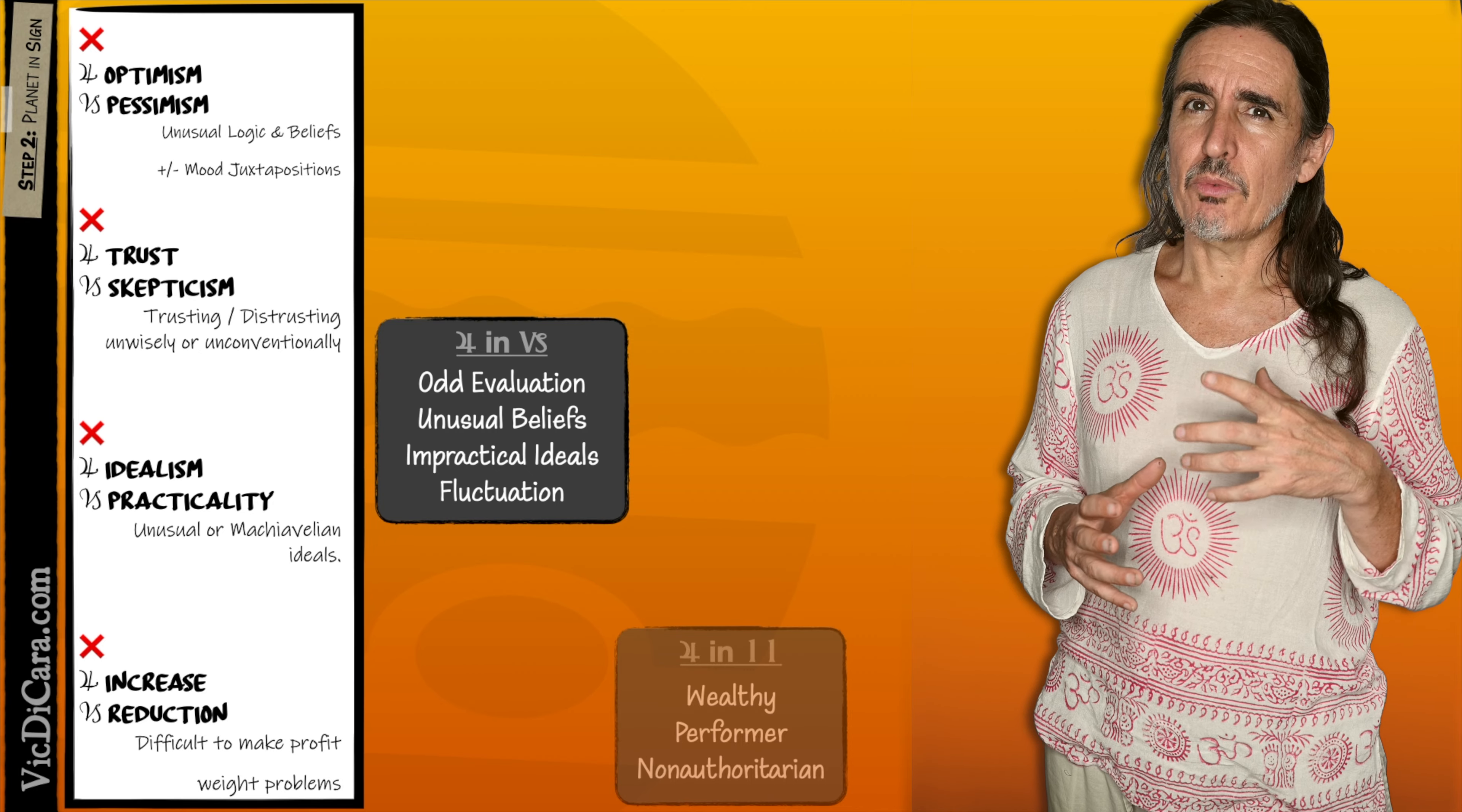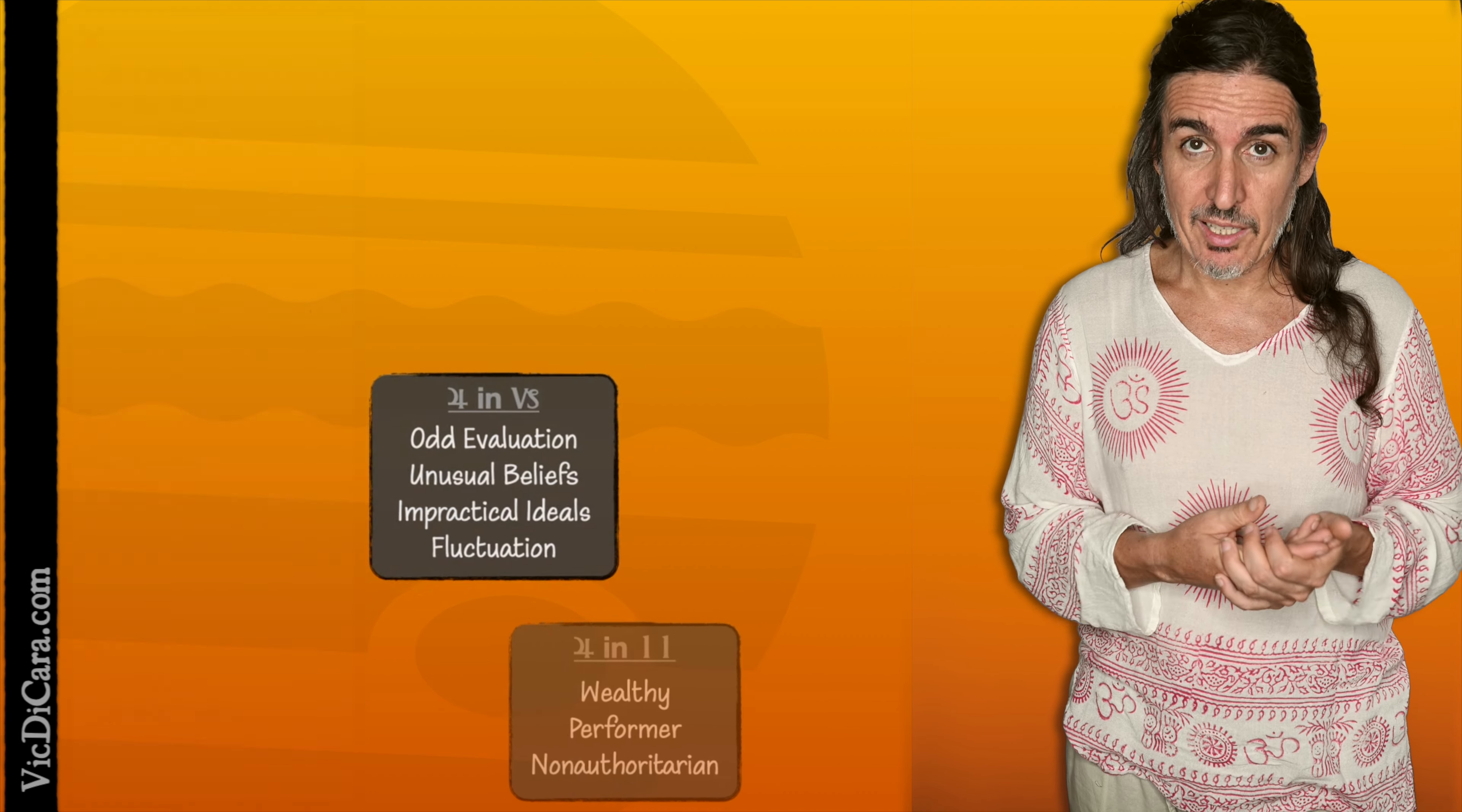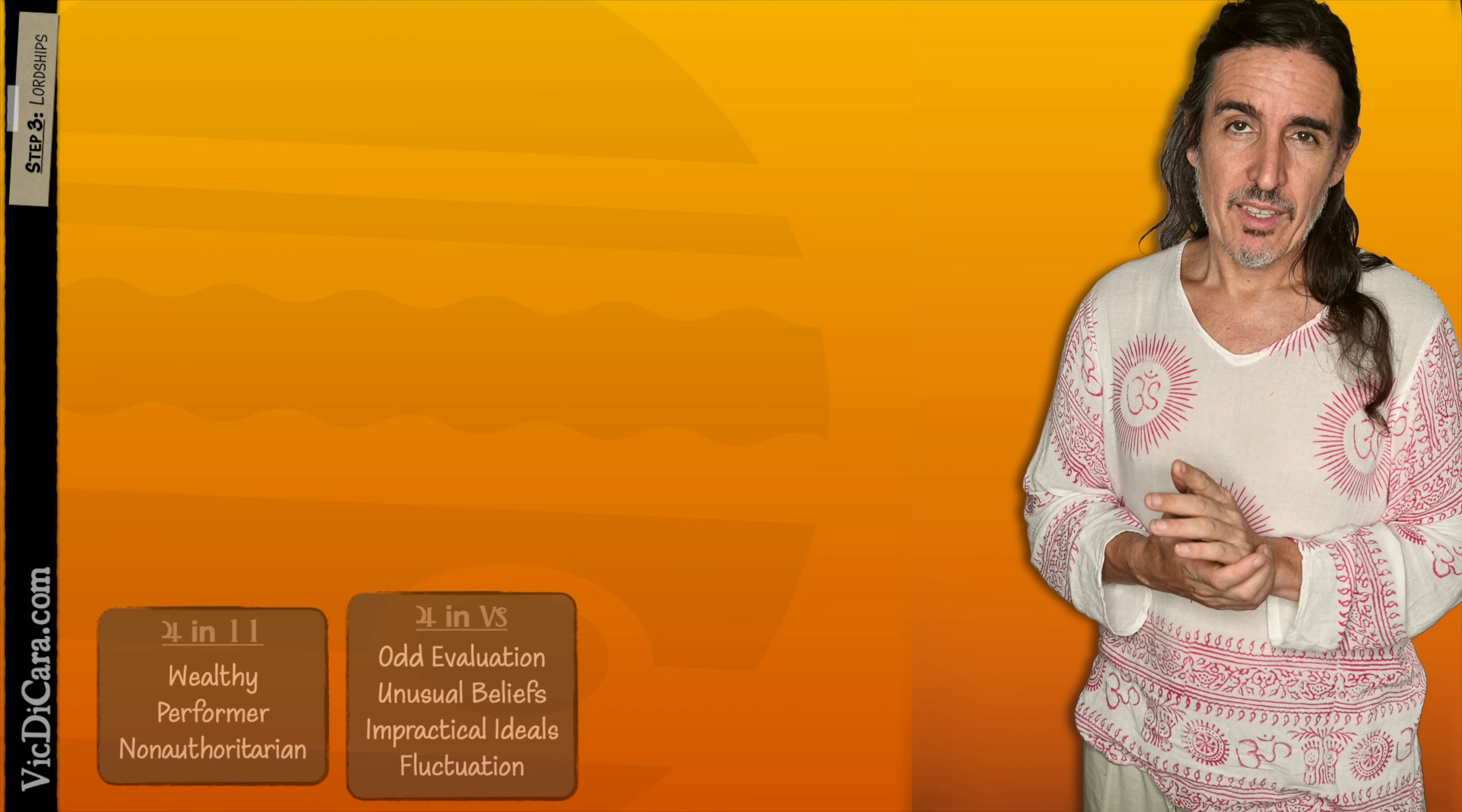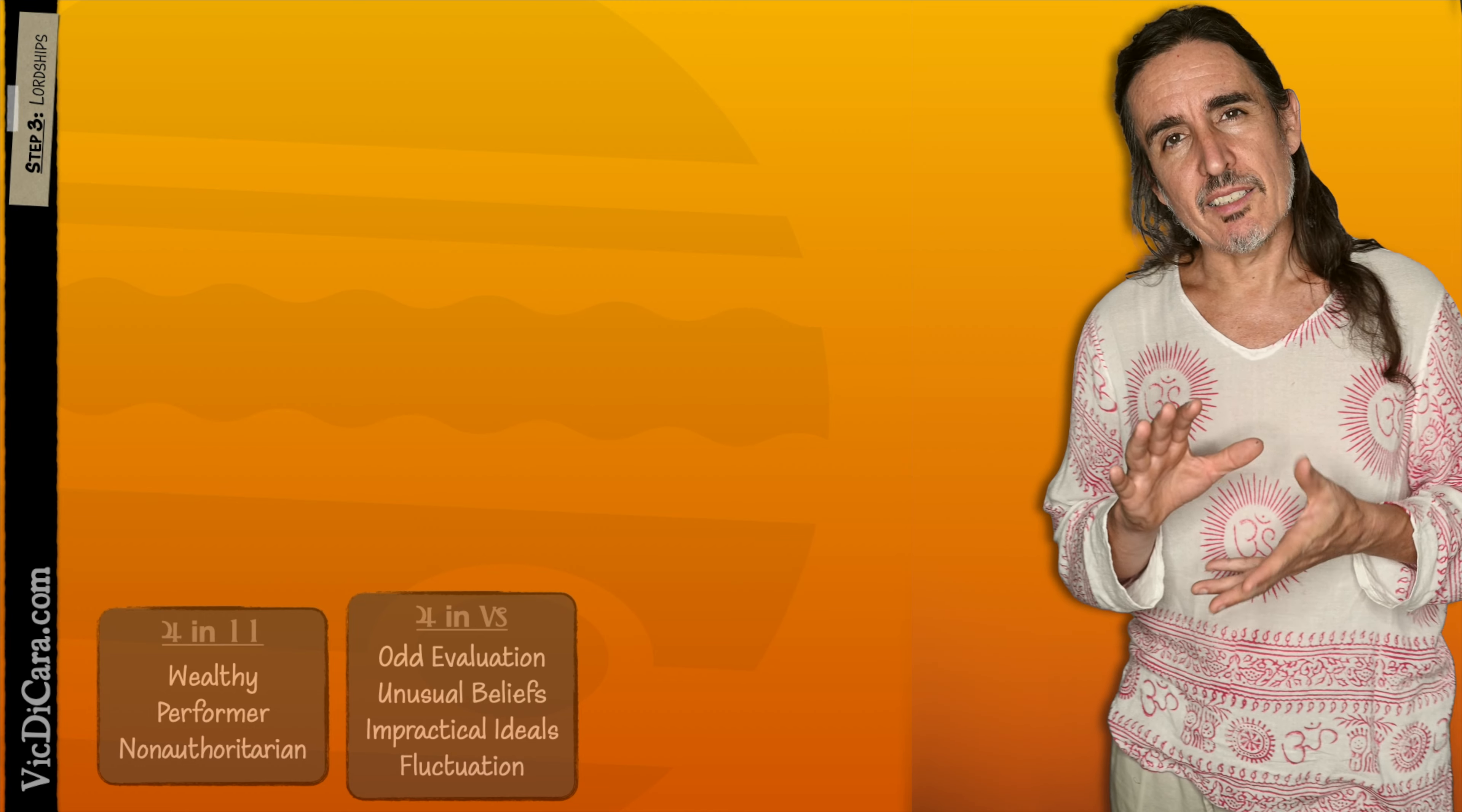So now that we're refreshed on what Jupiter in the 11th symbolizes and what Jupiter in Capricorn symbolizes, we might be able to explain what Jupiter symbolizes in Capricorn in the 11th. But there's one more thing which is super important and which gives a lot of very important information. It has to do with the houses that are necessitated if Jupiter is in Capricorn in the 11th house.